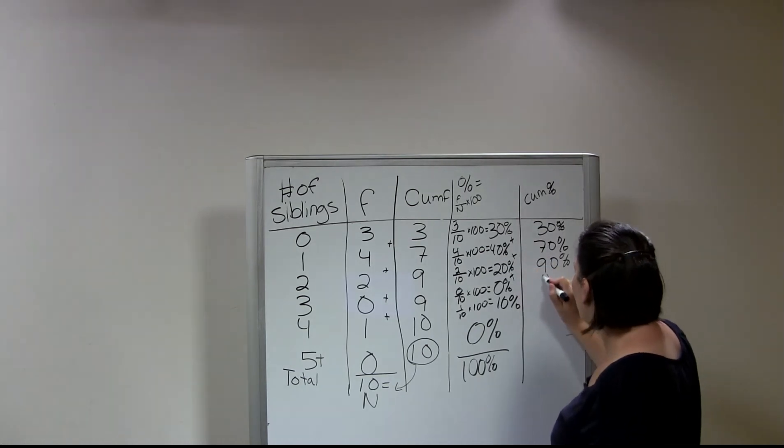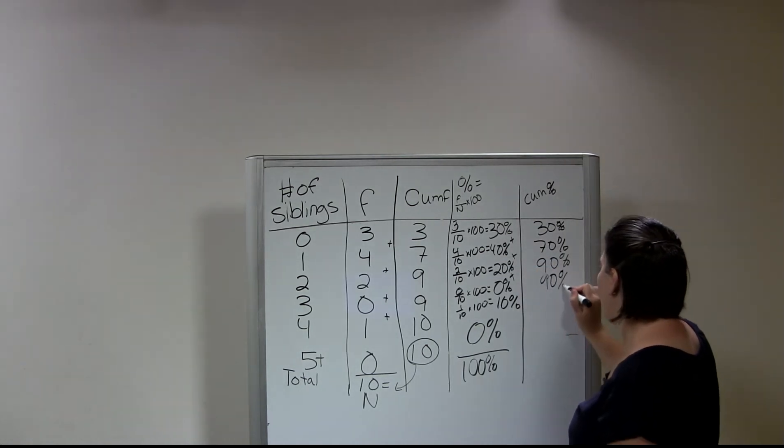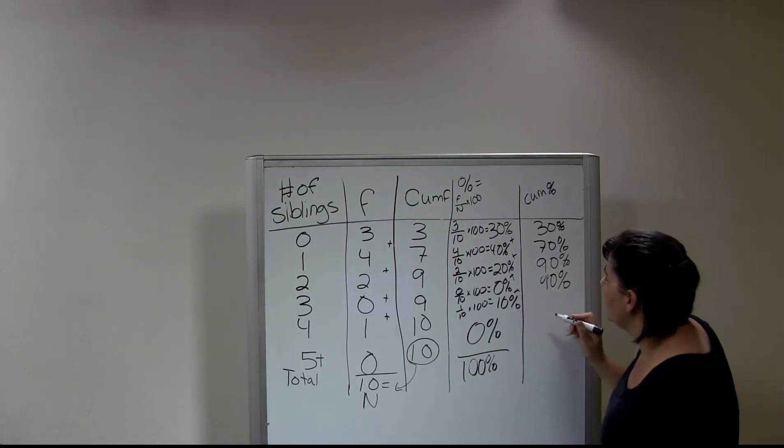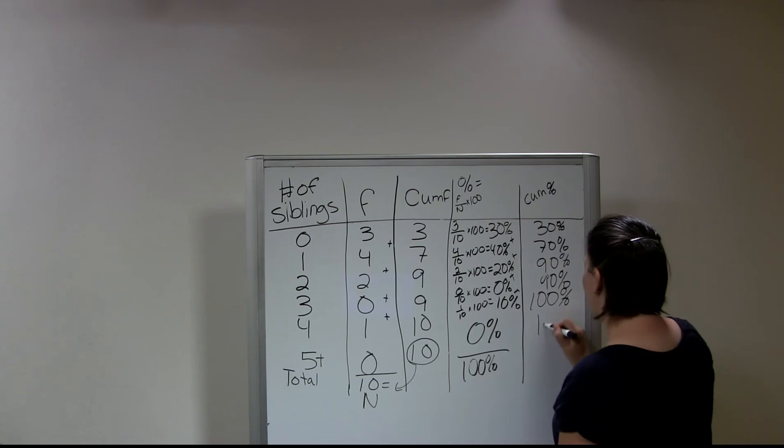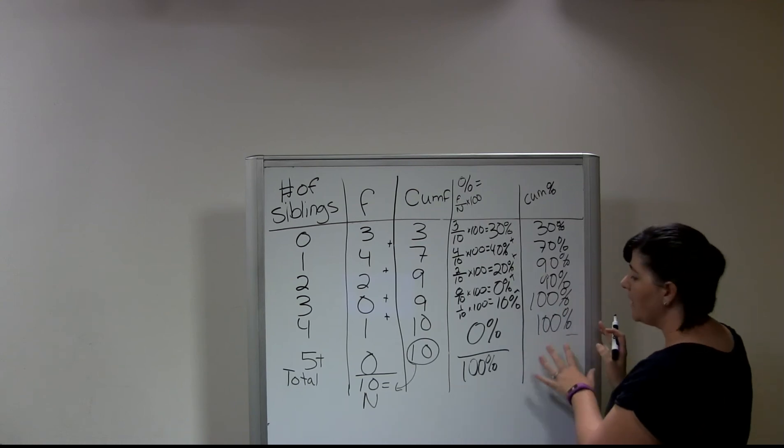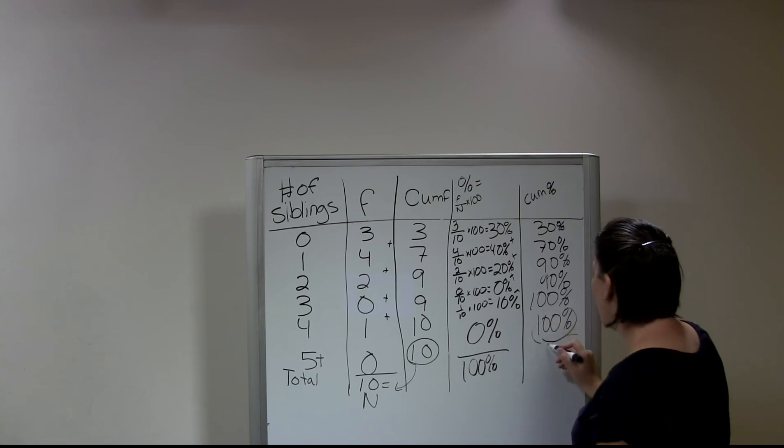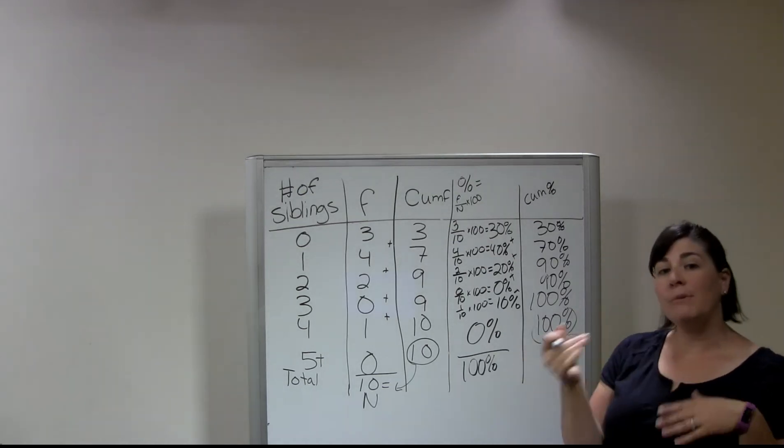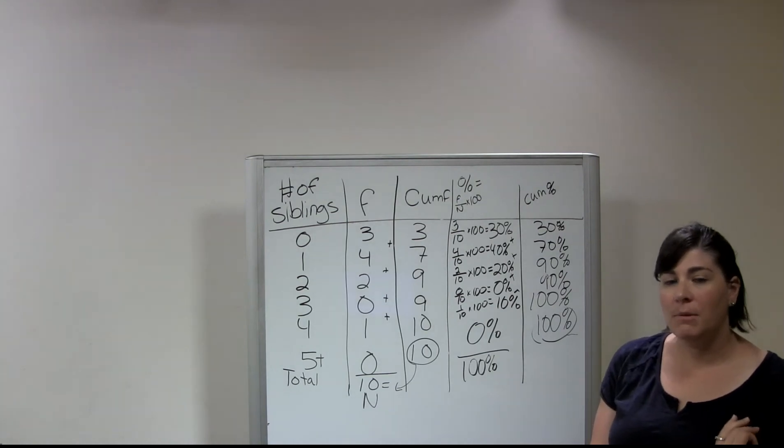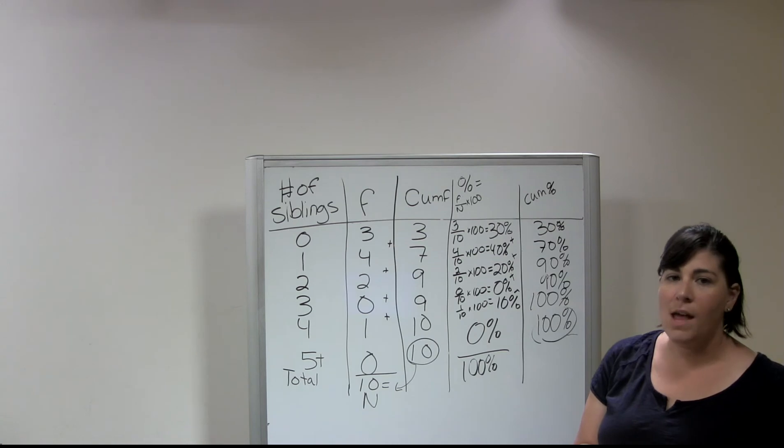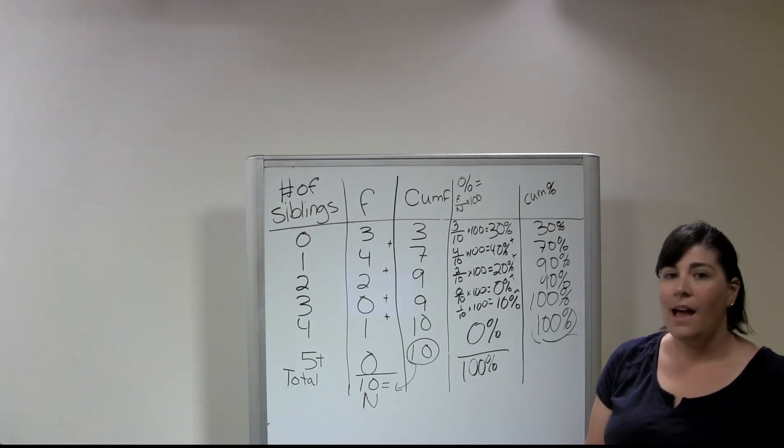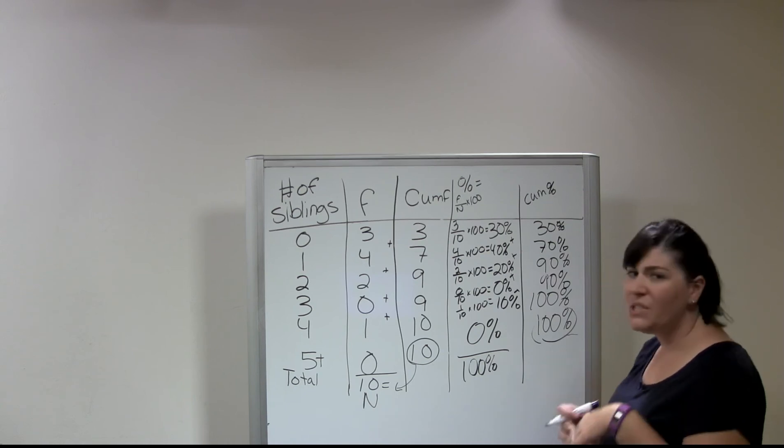And then if we add zero, we're going to have 90 percent again. And then we add 10 percent, which will give us 100 percent. And then we add zero, and that gives us 100 percent again. So again, when you are done here, this 100 percent, this should always be 100 percent. Now again, if you're rounding because you've got two decimal places, you're going to maybe end up with a 99.99 or a 100.01, and that's okay. But it should be really close to 100 percent. So that's all it is. That's a frequency distribution.